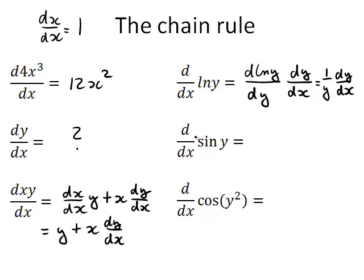Looking at d/dx sin y, that is d sin y by dy times dy by dx, according to the chain rule. That gives us cos y times dy/dx.